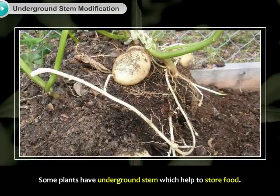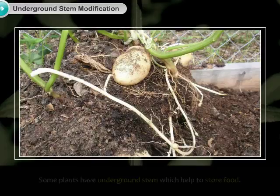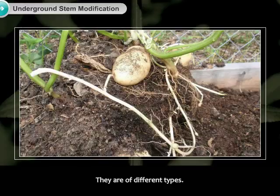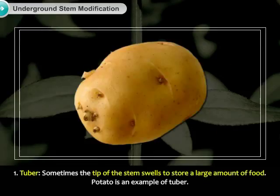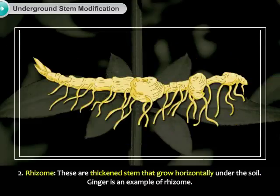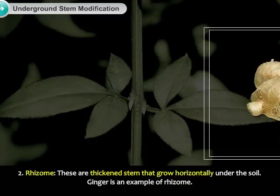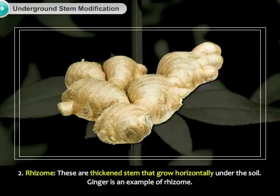Some plants have underground stems which help to store food. They are of different types. 1. Tuber: Sometimes the tip of the stem swells to store a large amount of food. Potato is an example of a tuber. 2. Rhizome: These are thickened stems that grow horizontally under the soil. Ginger is an example of a rhizome.